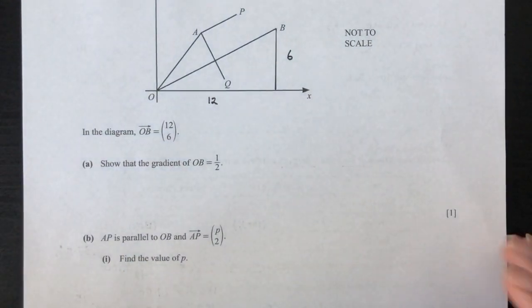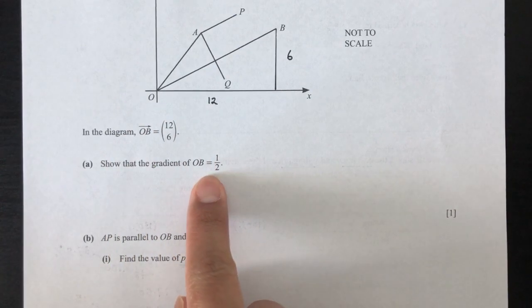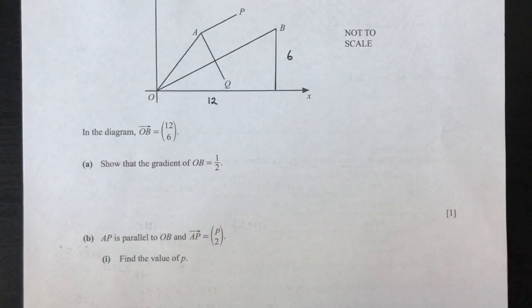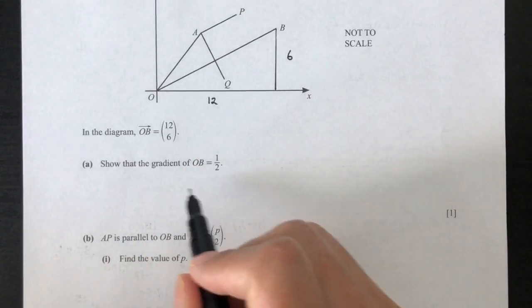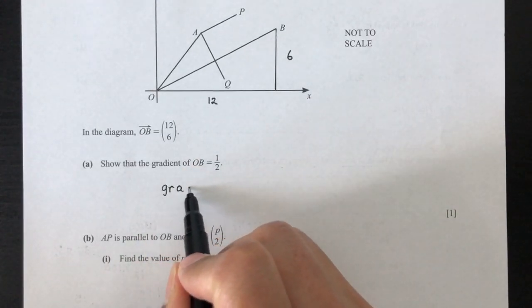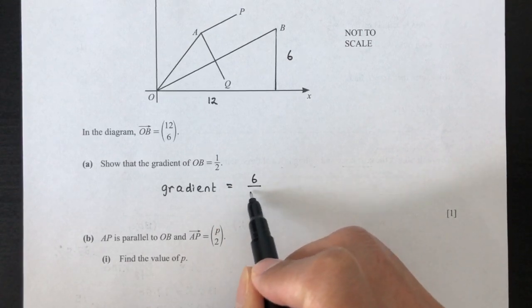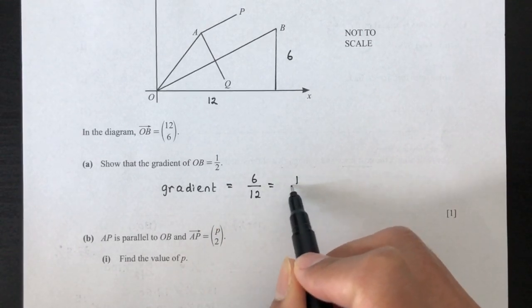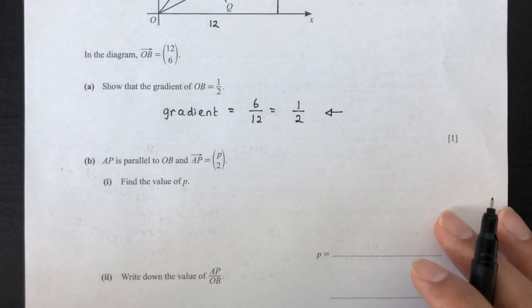Now question part A, show that the gradient of the OB, of the line OB, is equal to half. So how do you find gradient? As you guys know, we take the height, divide by the base. OB, 6 divided by 12, that is 1 over 2. That is part A.